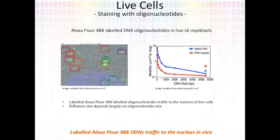Will labelled DNA oligonucleotide probes be able to actually traffic to the nucleus in a live cell? Well, it turns out that some of my colleagues from WSU have actually been looking at this. As it so happens, Alexa 488-labelled DNA oligonucleotides in live myoblasts have been seen to traffic to the nucleus. As we can see from the graph on the right, the rate of migration of these probes depends largely on the size of the DNA oligonucleotide. For my master's thesis, I will be using short labelled probes to enable this trafficking. In this study, the length of the probes was 20 base pairs long.